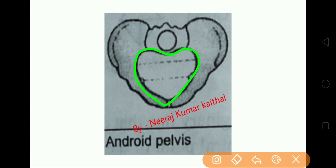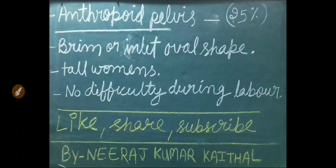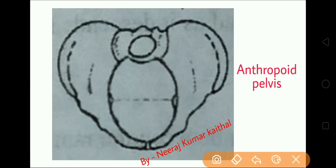The third pelvis type is anthropoid pelvis. Approximately 25 percent of women have this type of pelvis. The brim or inlet is oval shaped. It is mostly found in tall women and there is no difficulty during labor. As seen in the diagram, the anthropoid pelvis has an oval-shaped pelvic brim or inlet.